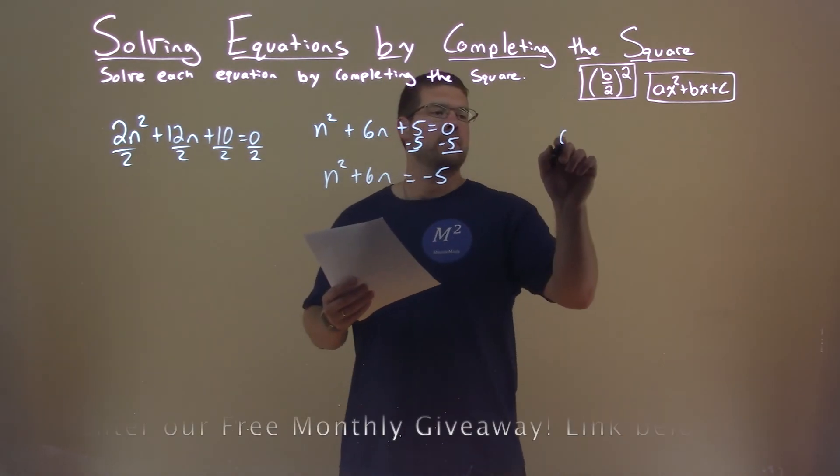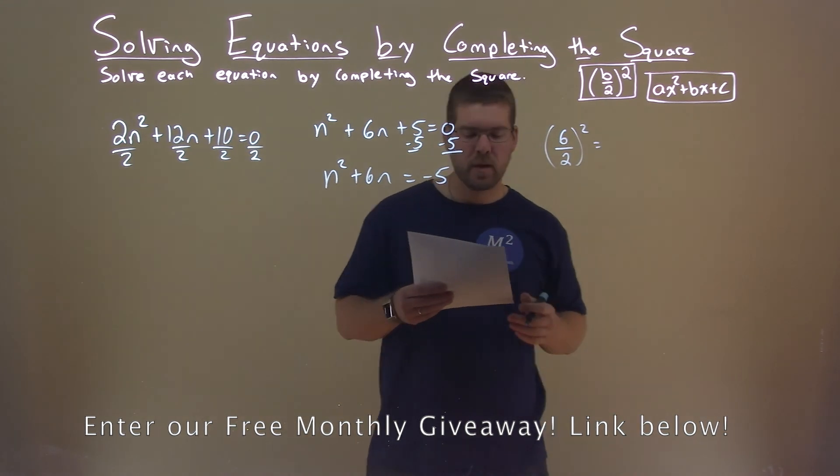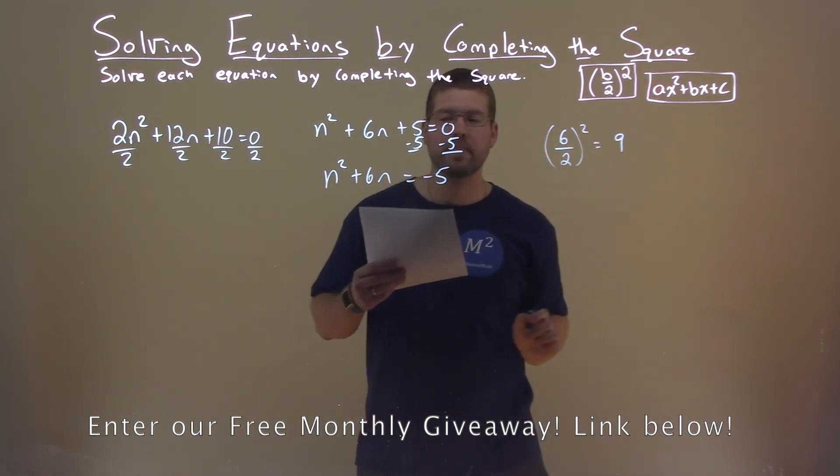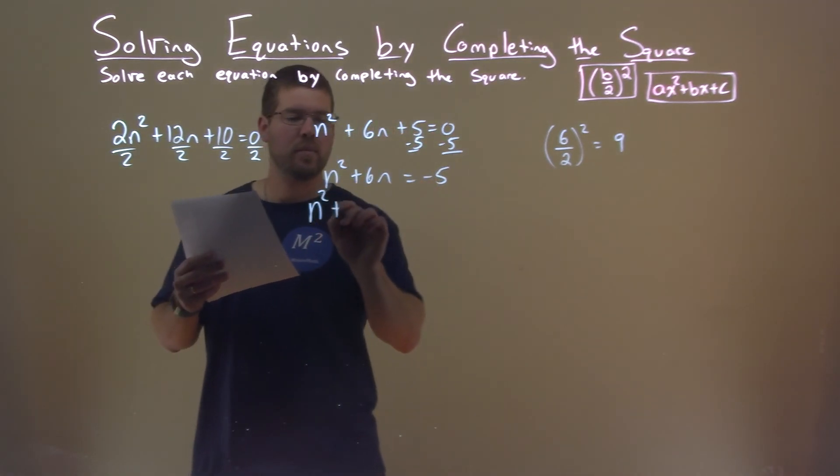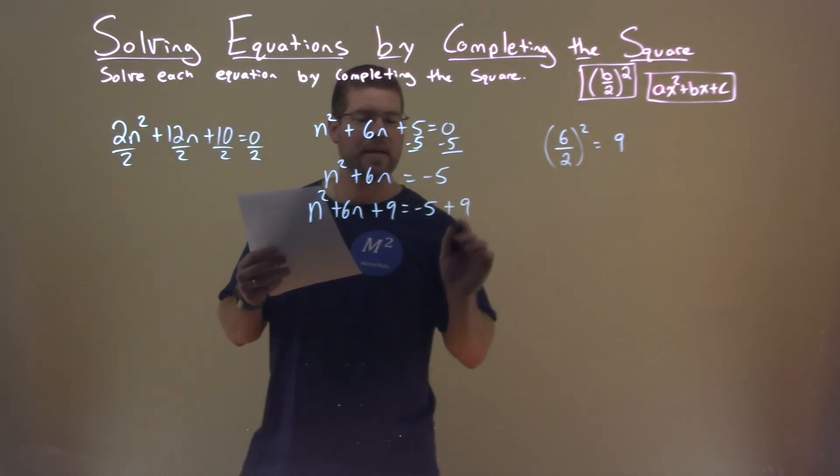So now I'm going to look at my b value which is 6. I'm going to divide that by 2 and square it. 6 divided by 2 all squared is 9. So I'm going to take that 9 and add it to both sides of the equation: n squared plus 6n plus 9 equals negative 5 plus 9.